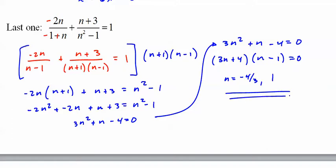Before we're done we check and lo and behold we put 1 in it won't work but negative four-thirds will, so that counts as our check. A lot of math built up from simple beginnings to get all the way up to that.